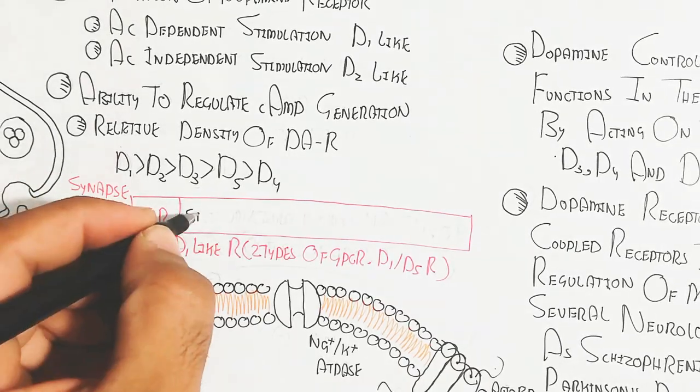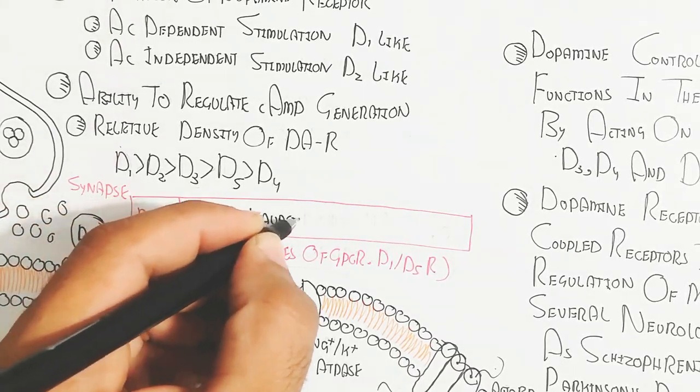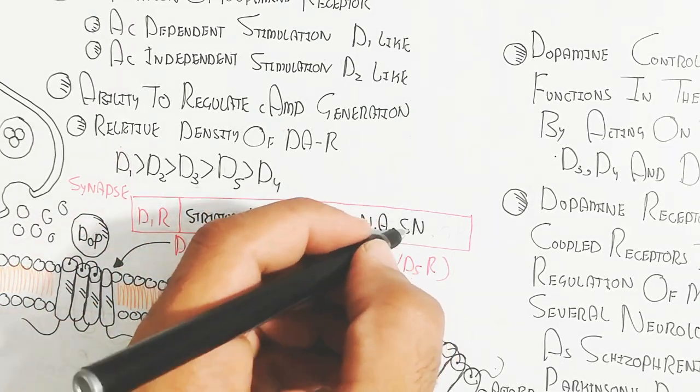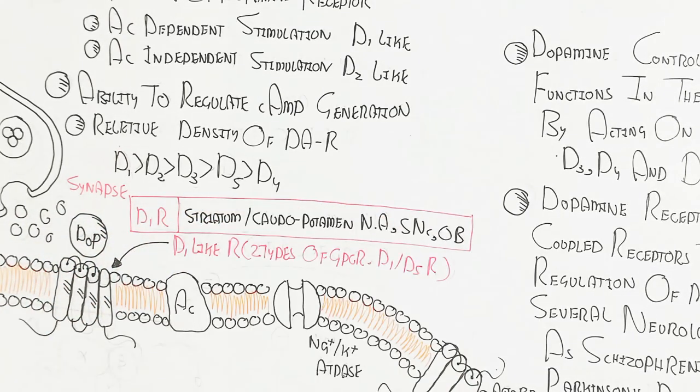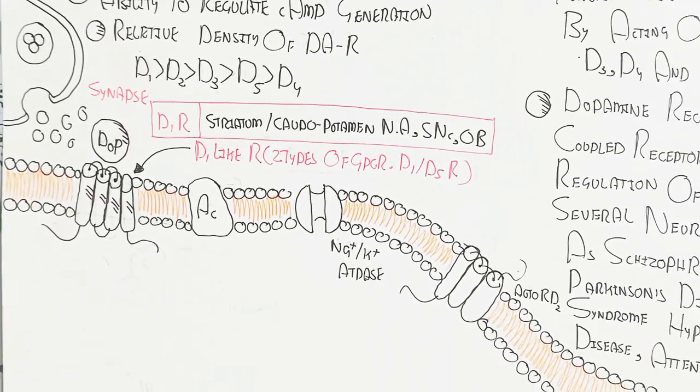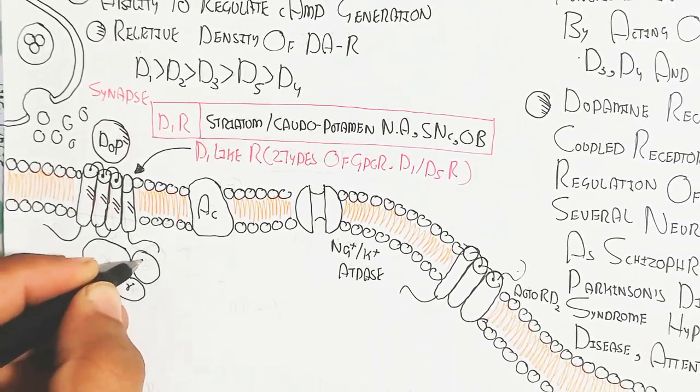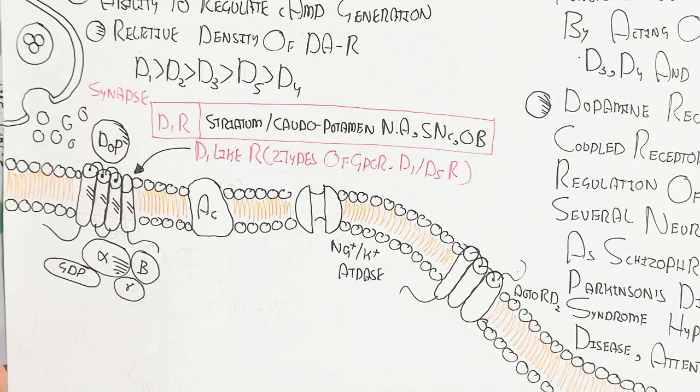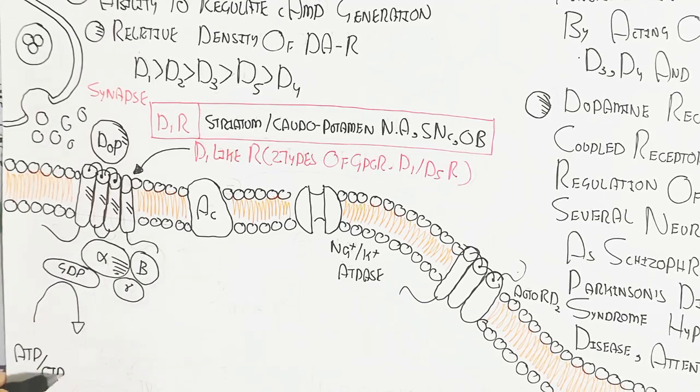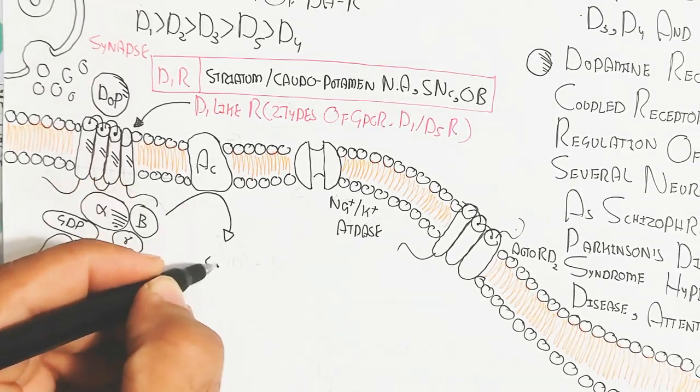The D1-like receptors are two types of GPCR: D1 and D5, present in the striatum, caudate-putamen, nucleus accumbens, somatosensory nucleus, and optic bulb.